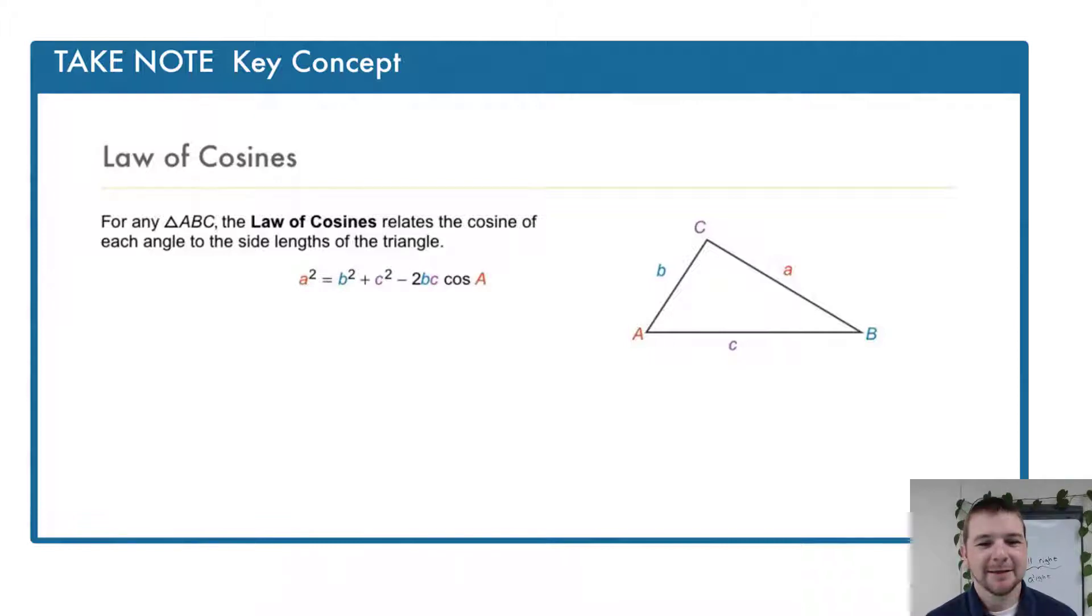We can relate values with the equation a squared equals b squared plus c squared minus 2bc times the cosine of angle A.